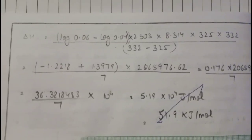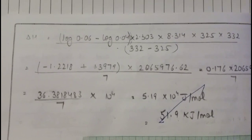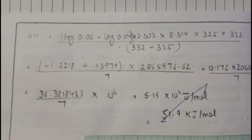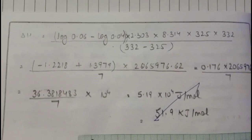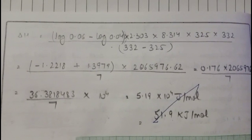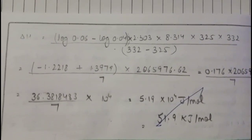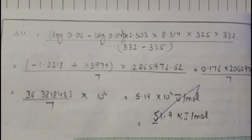Using the formula of delta H for 0.1 g of benzoic acid, delta H comes out to be 51.9 kJ per mol. This is the conclusion of the solubility of benzoic acid. Thank you.